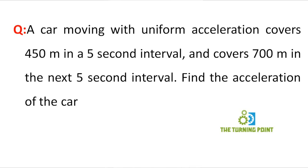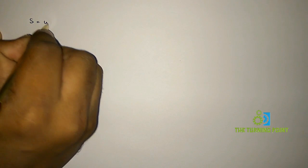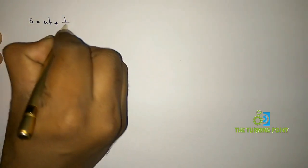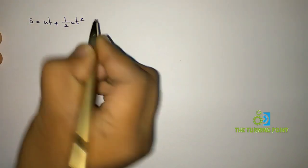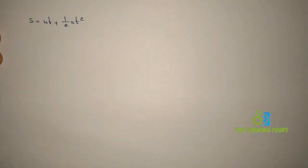Let u be the initial velocity, v be the final velocity, a be the acceleration, t be the time, and s be the distance. From the relation s = ut + ½at², we want to establish a relationship between initial velocity and acceleration.